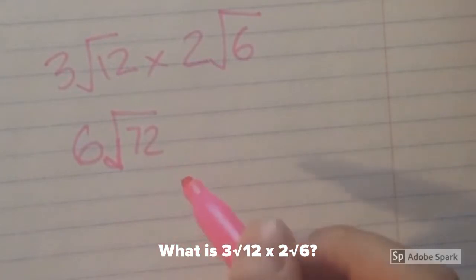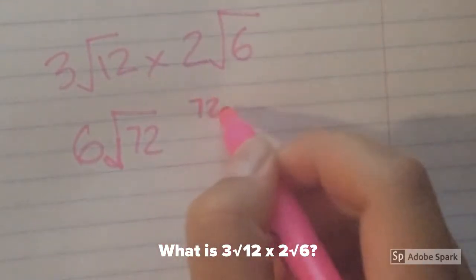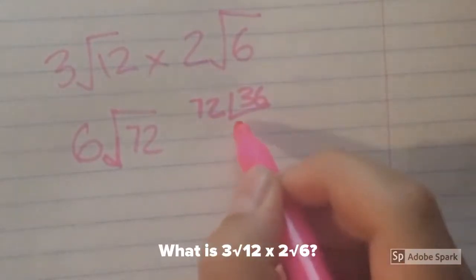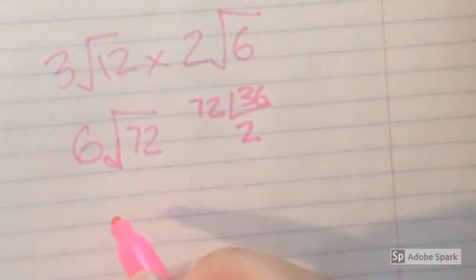Now we have to simplify. We will divide 72 by 36, which equals 2. So now we have this equation.